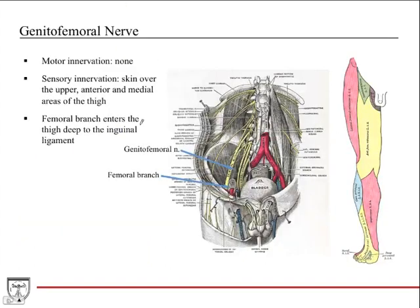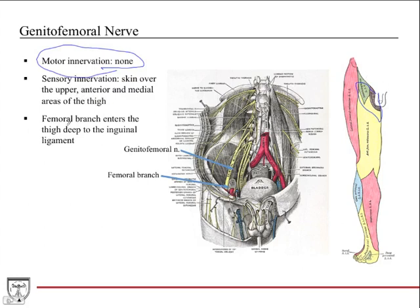The genitofemoral nerve — we talked about this in the abdomen, but it's relevant to the thigh region. Motor innervation: it doesn't do any motor innervation in the thigh. Sensory innervation: it does the skin over the upper, anterior, and medial areas of the thigh, near the genital region. The genital branch goes into the genital region.